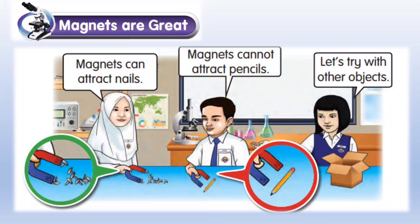Let's read this conversation. Magnets can attract nails. Magnets cannot attract pencils. Let's try with other objects.